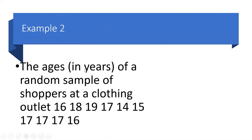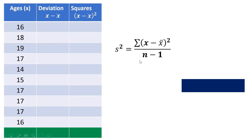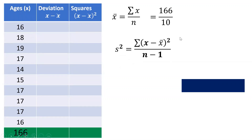Let's have another example. The ages in years of a random sample of shoppers at a floating outlet are the following. Since this is a random sample, we will use the formula for samples. We write the data in a table: the first column is the ages, that is our X; then the deviation column X minus x-bar, where x-bar is the sample mean; then the squared deviation column. The sample mean equals the summation of X over the total number of samples. Adding the ages gives 166, so 166 divided by 10 equals 16.6 — that is our sample mean.